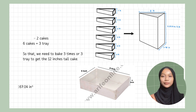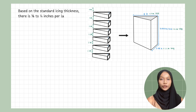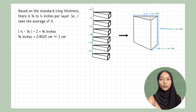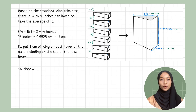Based on the standard icing thickness, there is 1/8 to 1/4 inch per layer. I take the average of it: 1/4 minus 1/8, divided by 2, equals 3/8 inches. Converting to centimeters, we get 0.9525 centimeters, which I round off to 1 centimeter. I will put 1 centimeter of icing on each layer of the cake including on top of the first layer, so there will be a new volume because icing is added.